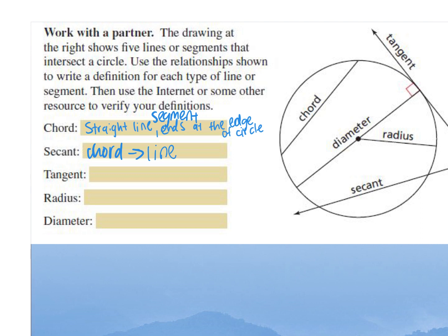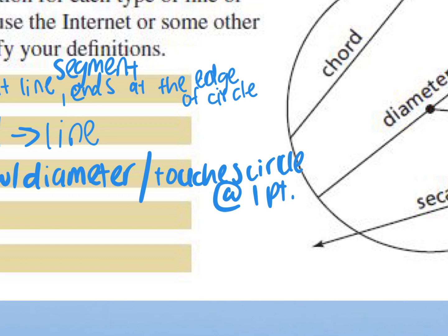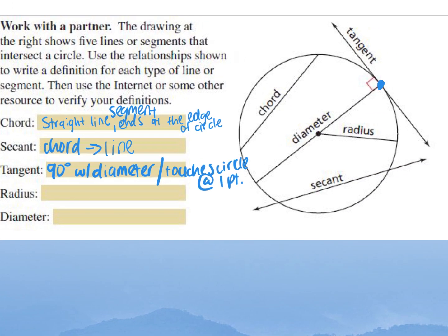How would you describe a tangent? There's a 90 degree angle — it forms a 90 degree angle with the diameter. And it touches the circle at one point. A chord and a secant touch the circle at how many points? Two. The tangent is different because it only touches the circle at one point.